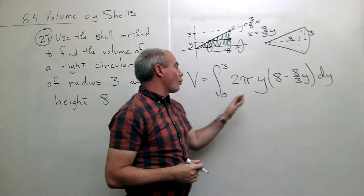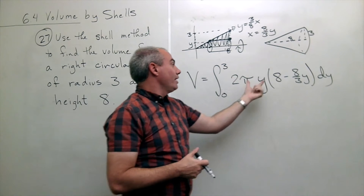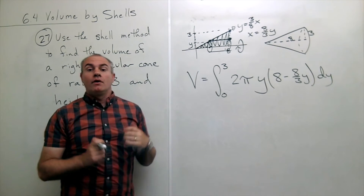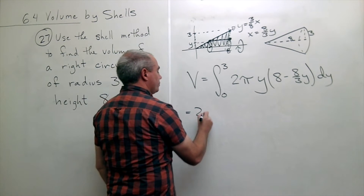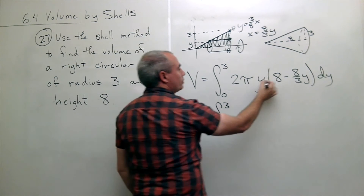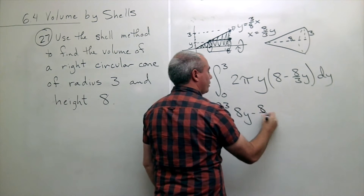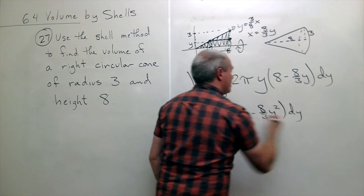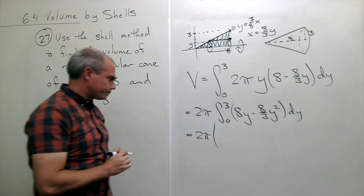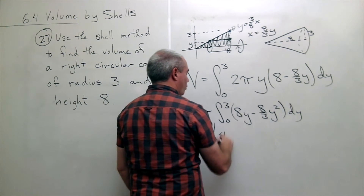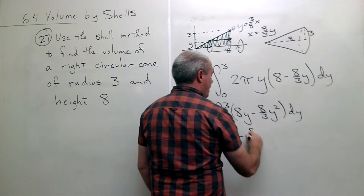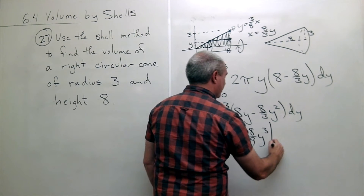Notice everything here involves y — we're integrating from a y value to a y value and everything inside involves y, because we're chopping up y. Let's integrate: pulling out the two pi, I get the integral from zero to three of eight y minus (8/3)y squared dy. Taking the antiderivative, I get two pi times: antiderivative of eight y is four y squared, and antiderivative of (8/3)y squared with a negative in front is negative (8/9)y cubed, evaluated from zero to three.